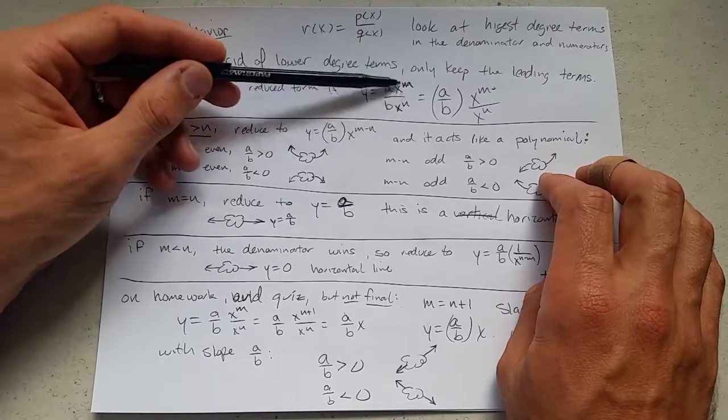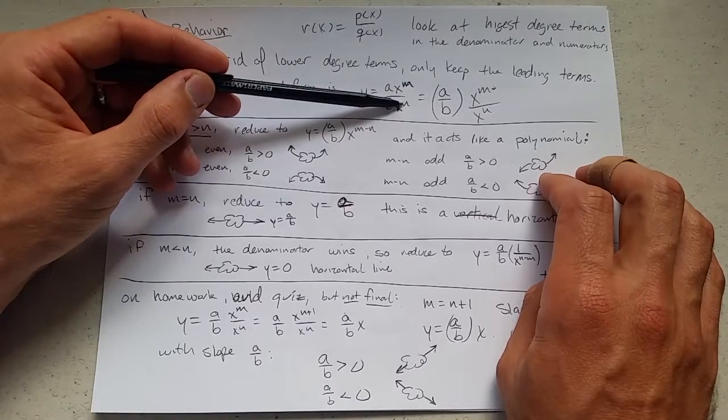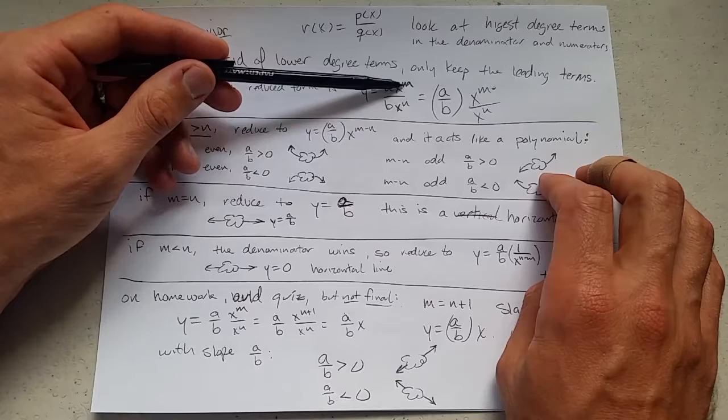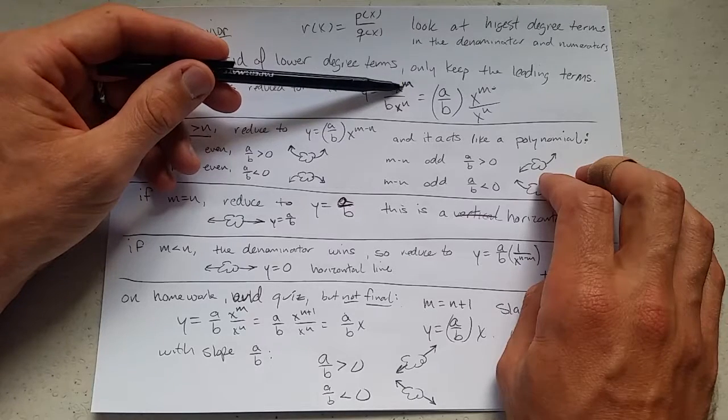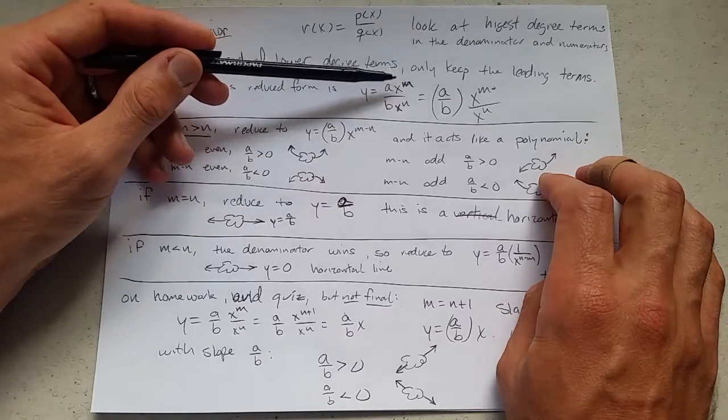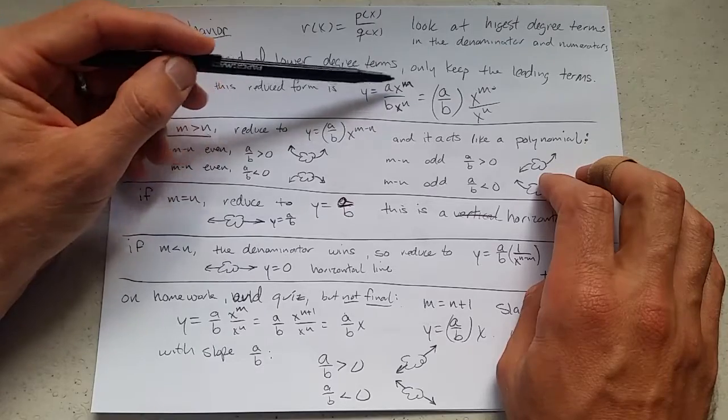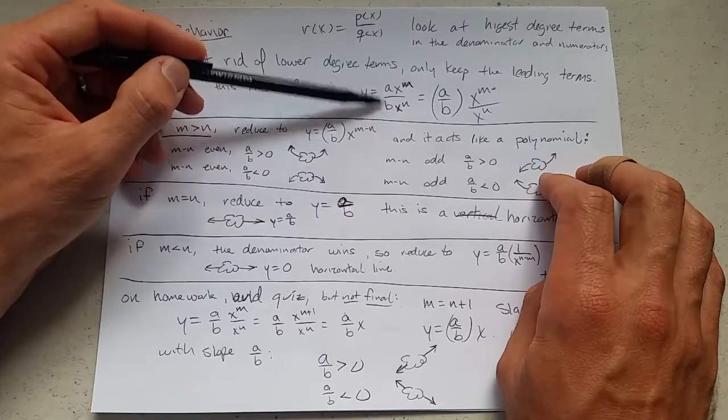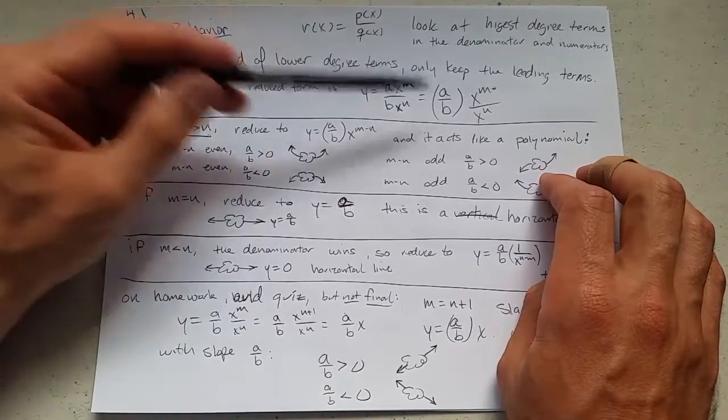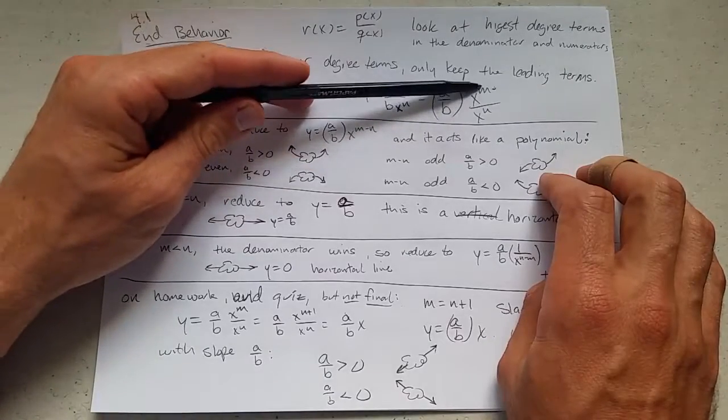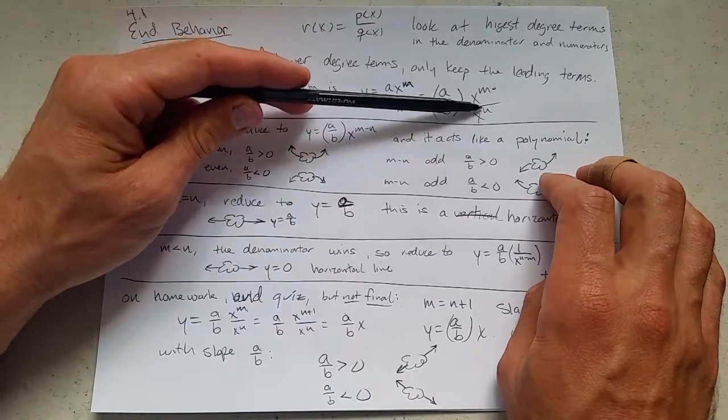Now, m and n, they're definitely going to be integers, positive integers. One of them could be bigger or smaller than the other, or they could be equal. Regardless of which one's bigger or smaller, you can always factor out a divided by b. So you can write it as this number, times x to the m power, divided by x to the n power.